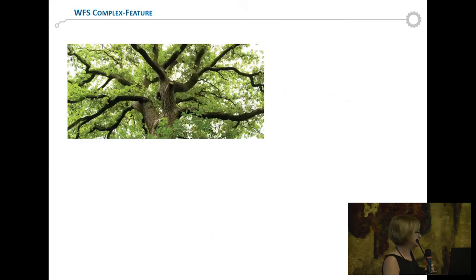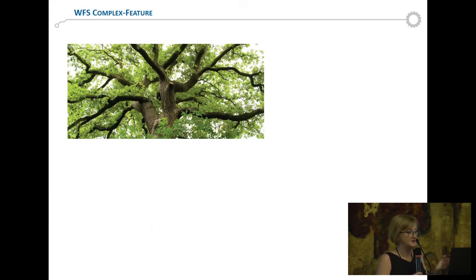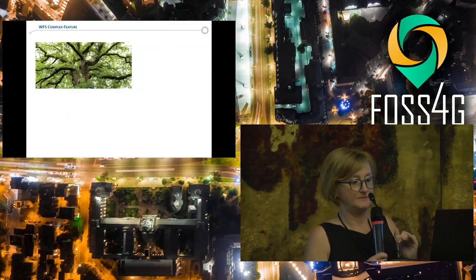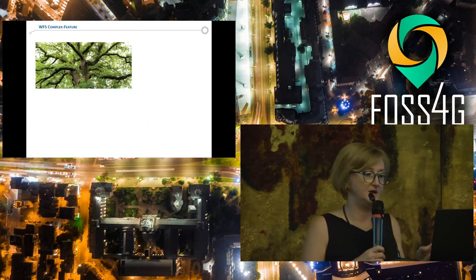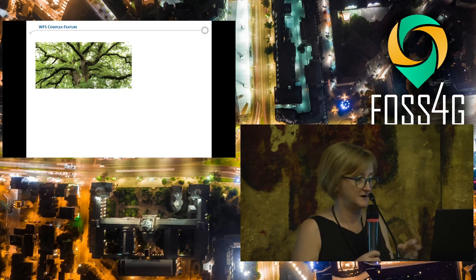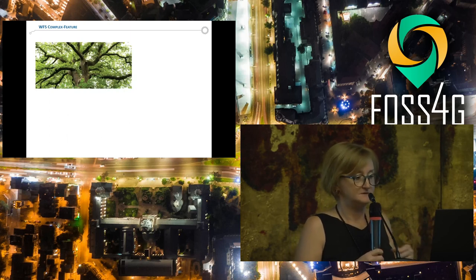I decided to use the image of a tree to explain what is different about WFS complex features. Normally WFS has a flat structure — one feature, one record. And if we have many pieces of information, we can combine them in a single field altogether. But it's a flat structure. With complex features, one service is like a tree: it has one trunk that contains the main information, and then many branches, one for each specific type of information that I need.